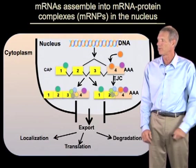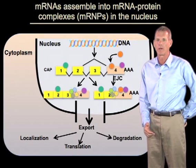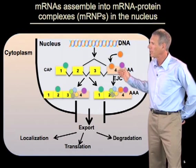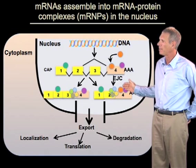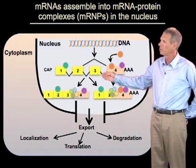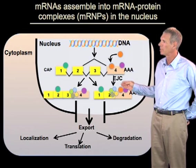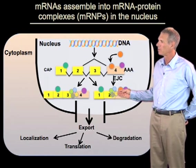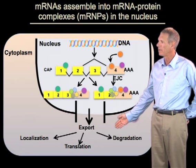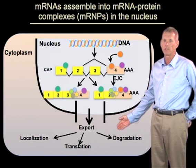During the process of RNA biogenesis in the nucleus, a number of factors begin to associate with the mRNA. These include RNA binding proteins which bind to the transcript. In addition, there are certain complexes which are added during the process of RNA processing. For example, the process of splicing, where introns are removed, can deposit a protein complex referred to as the exon junction complex at the site where the intron was removed. Many of these factors then travel out to the cytoplasm with the mRNA and can affect its localization, translation, and degradation.